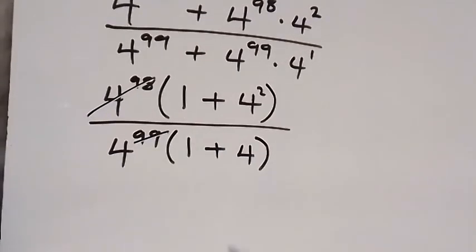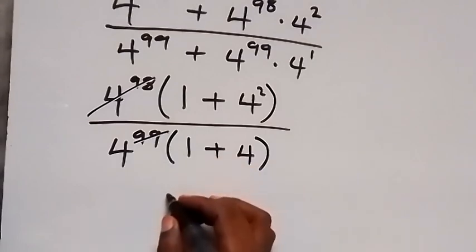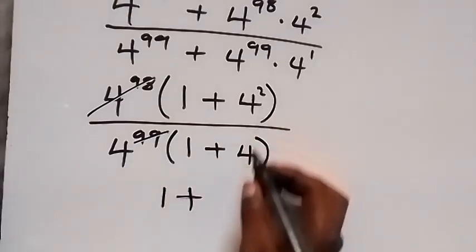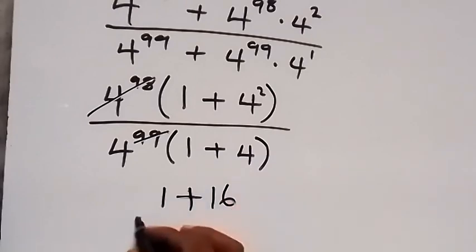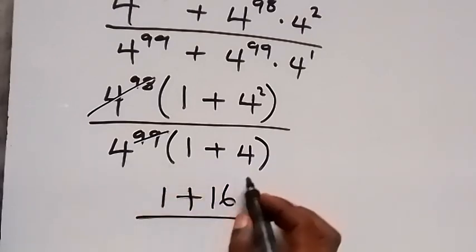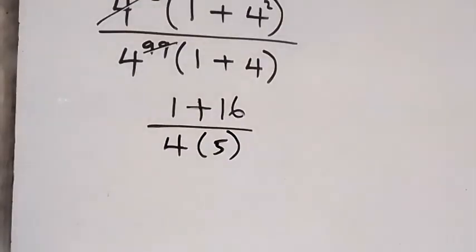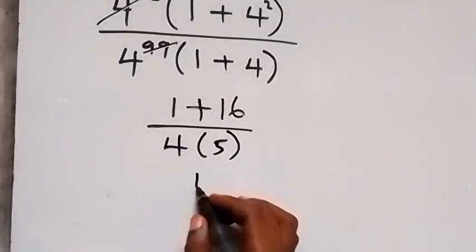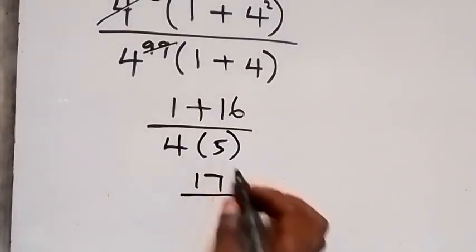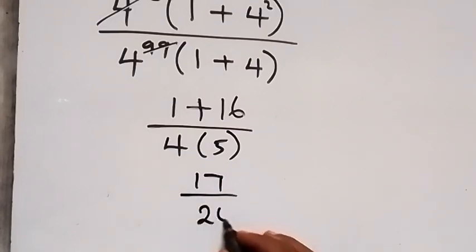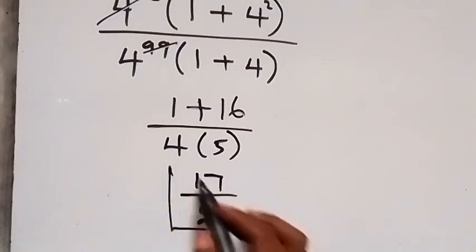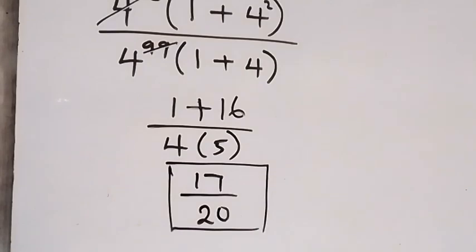We are left with 1 plus 4 squared over 1 plus 4, which is 1 plus 16 divided by 1 plus 4. That gives us 17 divided by 5, but accounting for the remaining factor of 4, we have 17 divided by 4 times 5, which is 17 over 20. So 17/20 is the simplified form of the given expression.